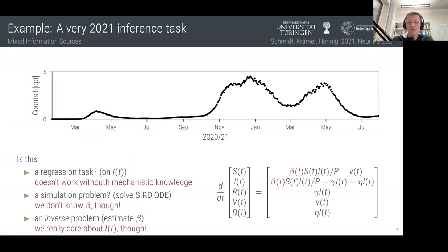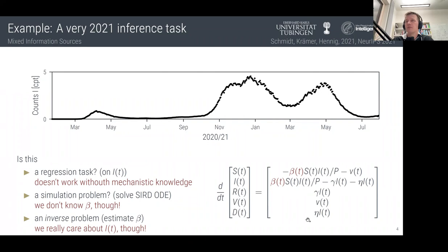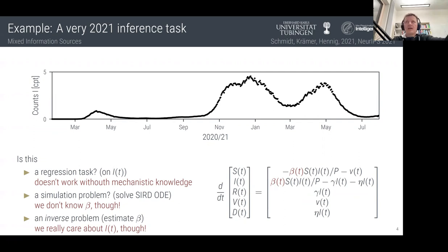Simple SEIR or SIRD or SIRVD compartmental models separate the population into susceptible, infected, recovered, vaccinated, and deceased groups, with a rule describing how people move between groups. This is a differential equation. If we think about this problem as a simulation problem, we can solve it with a differential equation solver. But there are two problems: first, in this description I've completely forgotten about the data — we don't know what role the data is supposed to play. And there are many solvers out there for differential equations.